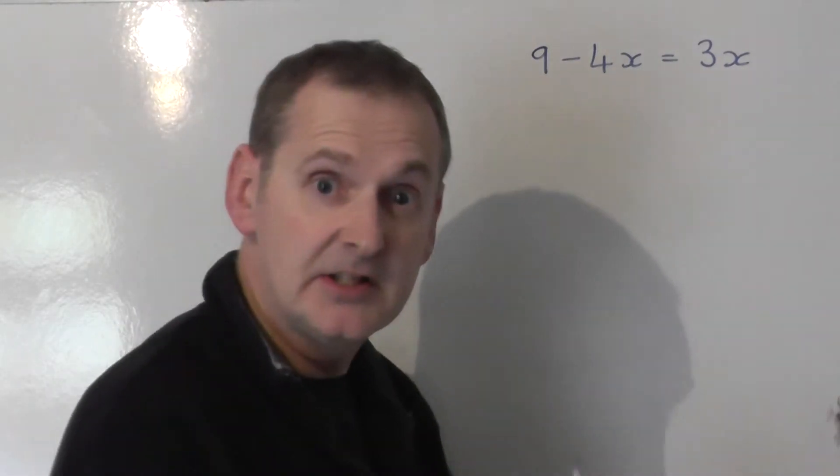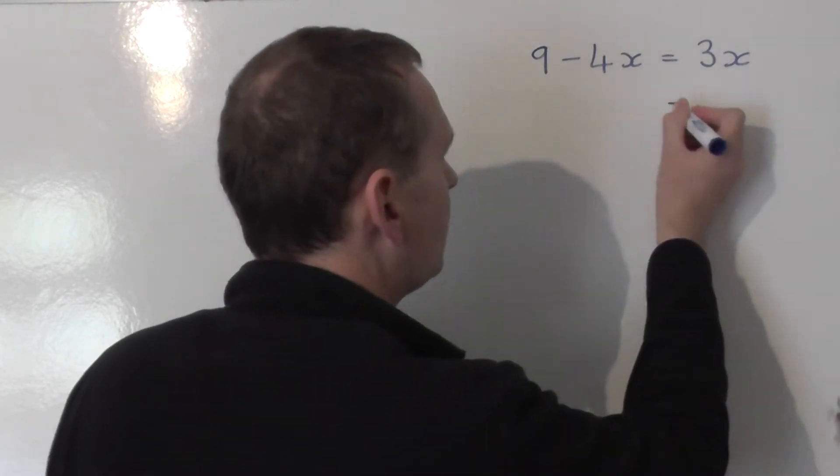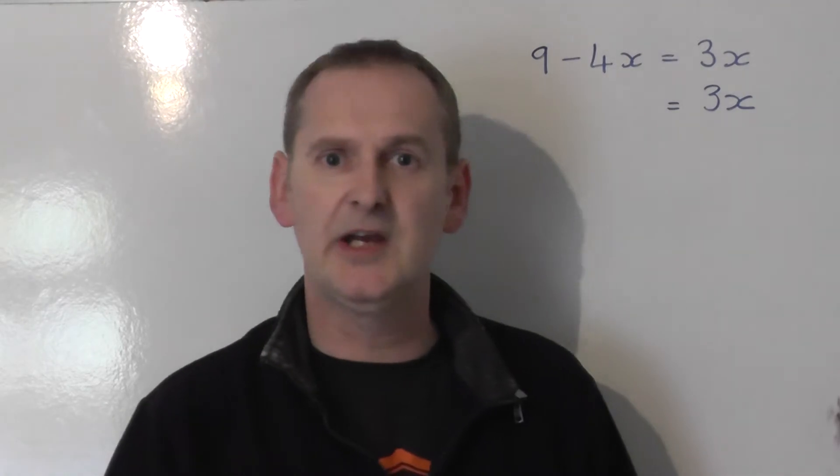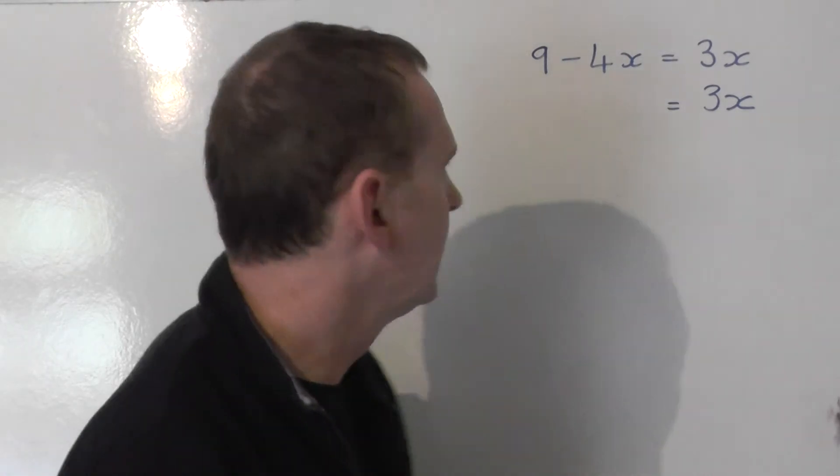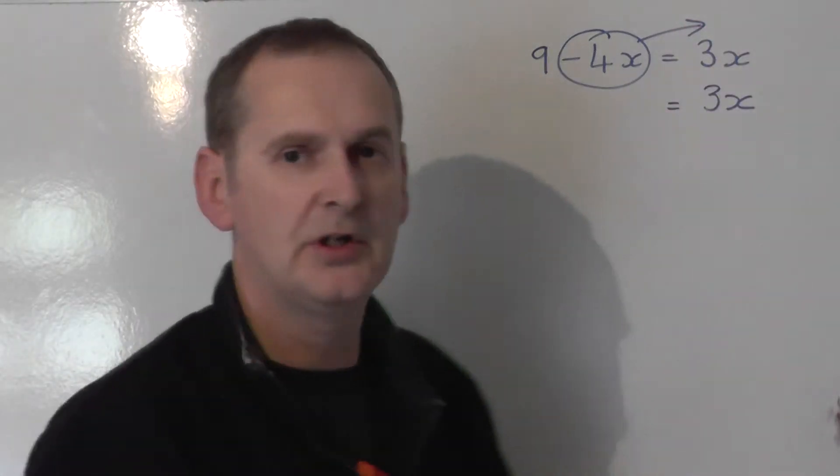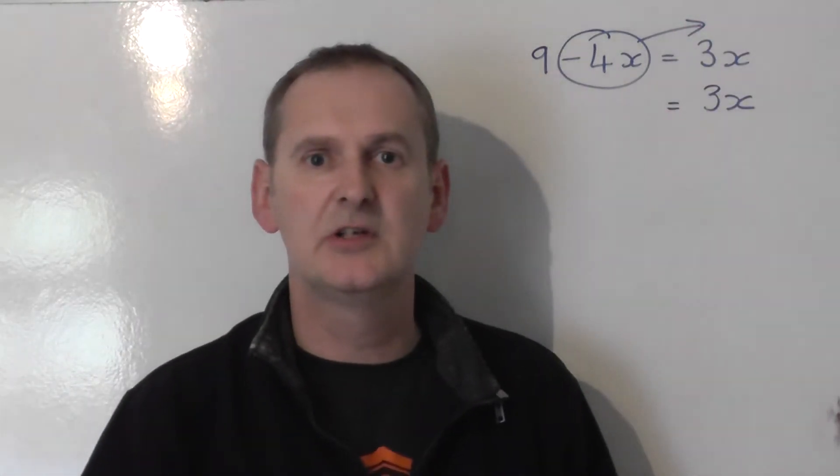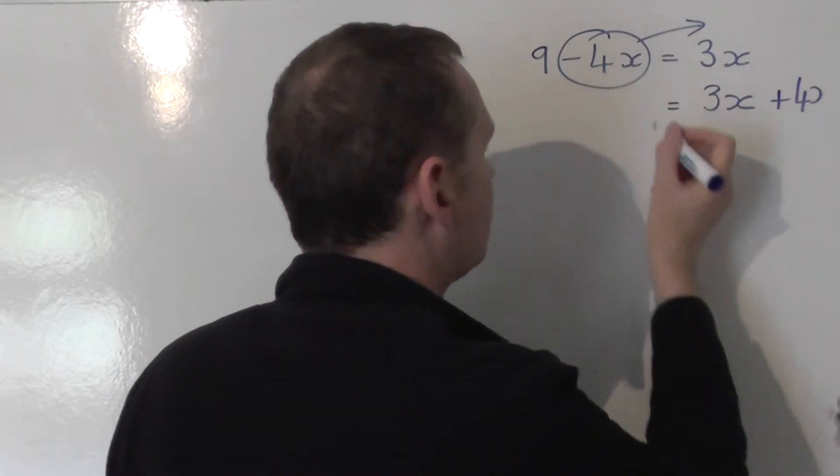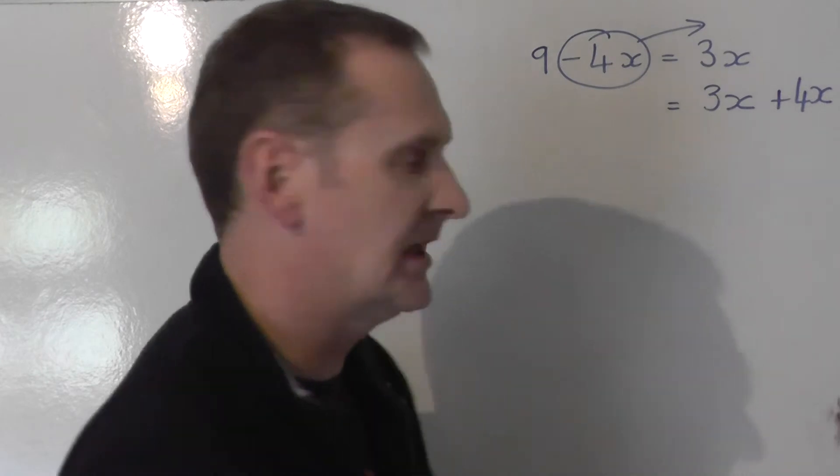So I'm going to take the x's to the right-hand side. I'm going to leave the 3x alone - it doesn't swap sides, stays as plus 3x. And I'm going to take that minus 4x to the other side to join it. When it swaps sides, the minus 4x becomes plus 4x.